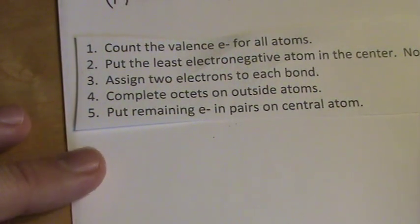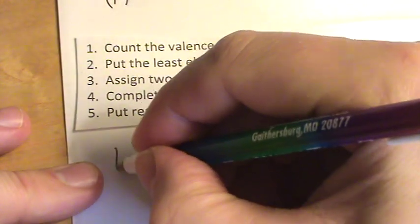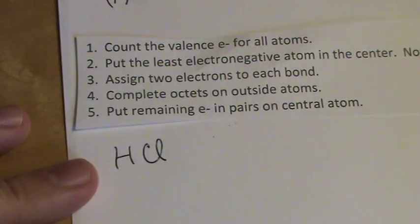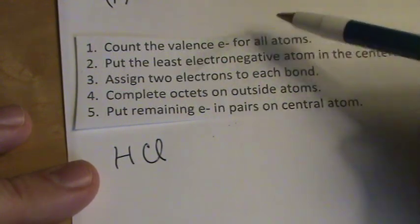For this one we're going to try hydrochloric acid, HCl, and first thing we have to do is find out how many valence electrons we're working with.